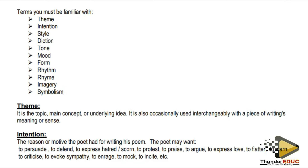When a poem depicts numbers of people being murdered, expressed over and over again, we understand there is anger. We understand he's evoking sympathy in us — his intention is to evoke sympathy for the bloodshed, or to enrage the audience so they can take action or protest. Intention is not general; it can come in each stanza, in two stanzas, or across the whole poem. We must check whether stanza one has a relationship with stanza two.